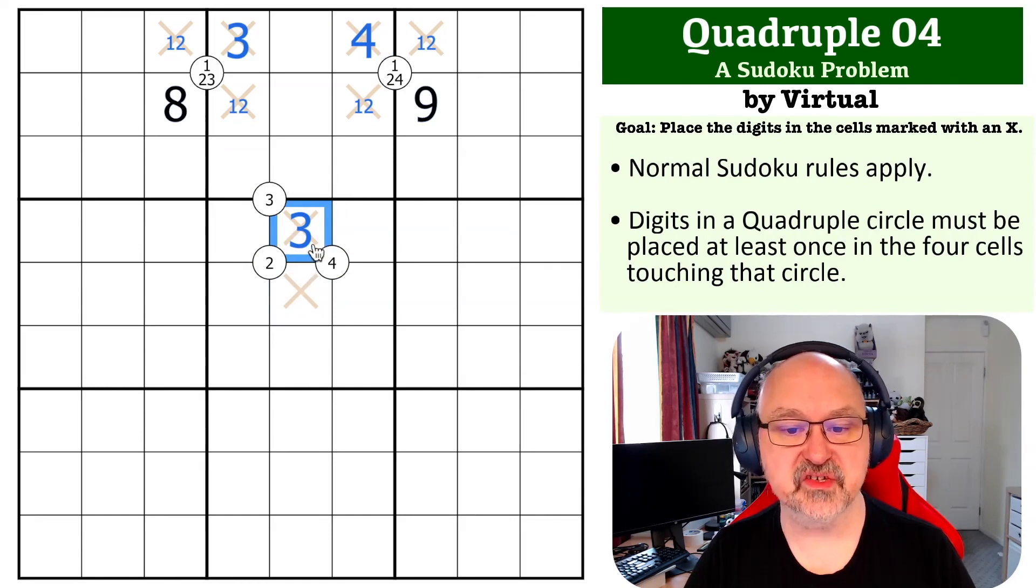We can use this four to look down at this clue and see that this can't be a four anymore because it's got a three in it, and those can't be a four because they see a four, so this becomes a four.